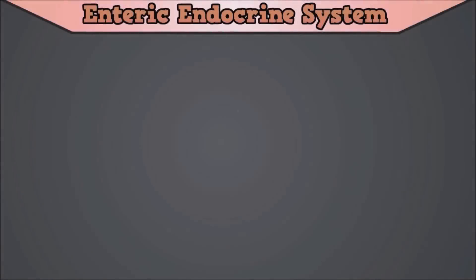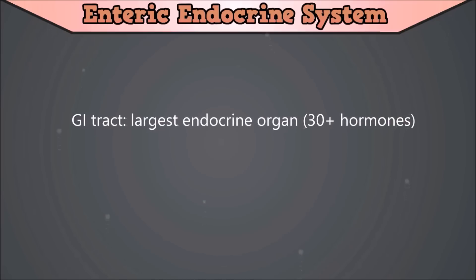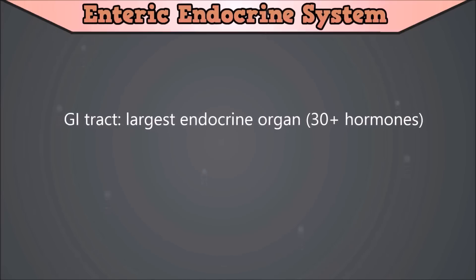Welcome to the Medical Zone. In this video, 5 hormones will be discussed that play important roles in the regulation of digestion in the gastrointestinal tract. First, we will shortly discuss some basic principles. With over 30 different hormones identified as being produced in the gastrointestinal tract, the gut has been described as the largest endocrine organ in the body.